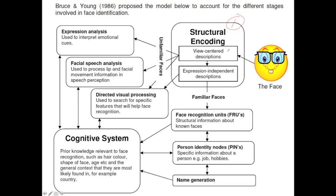This happens in the view-centred descriptions area, and at the same time the individual features are being processed in the expression-dependent descriptions. In this area, the rudimentary information from the basic first analysis is refined — so we're refining the information from structural encoding. First, there is a conclusion about the emotional state of the person being looked at, and this takes place in the expression analysis section.